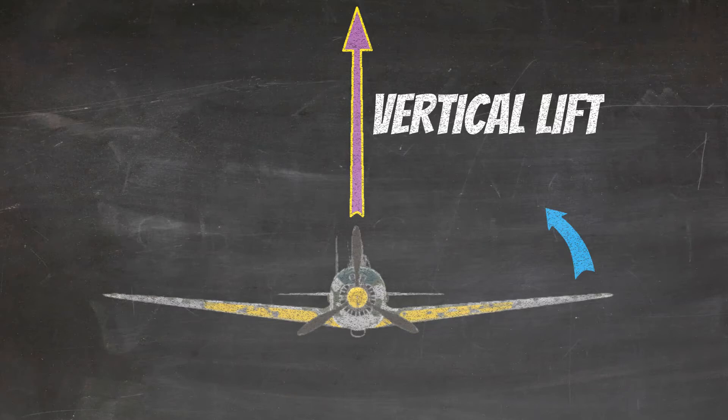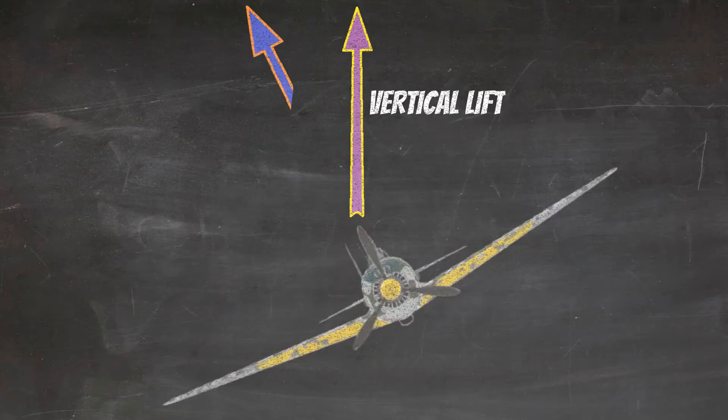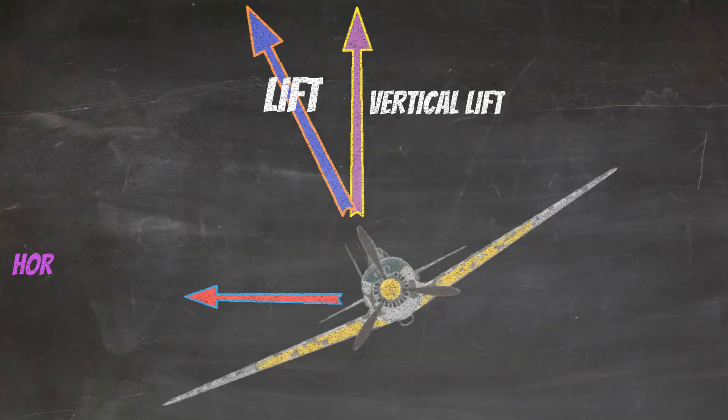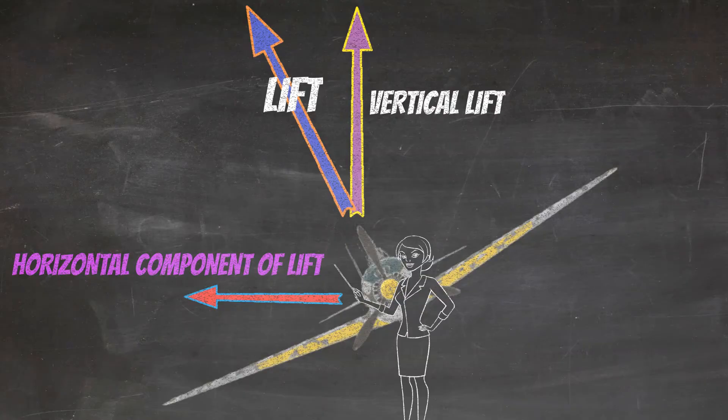But if we roll our airplane one direction or the other, not all the lift will be vertical anymore. Some of the lift will move laterally. We call this the horizontal component of lift. The horizontal component of lift is what makes our airplane turn.